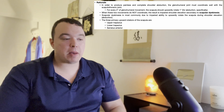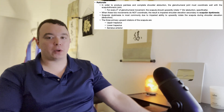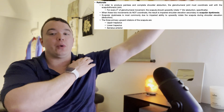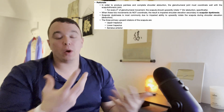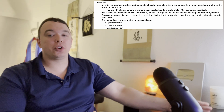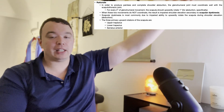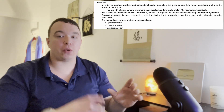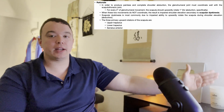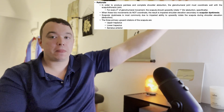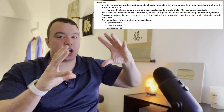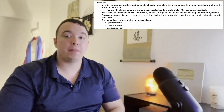Remember that as the shoulder abducts, if we look at the glenohumeral joint and the scapulothoracic joint, or just the scapula — for every two degrees of glenohumeral elevation, there's one degree of scapular rotation. So as I bring the shoulder up, that is the glenohumeral joint, the scapula, among other things, has to upwardly rotate.